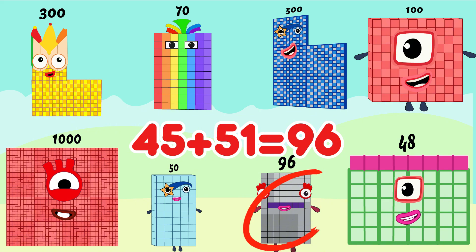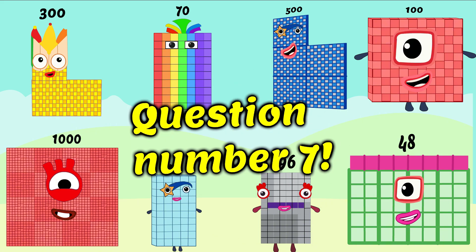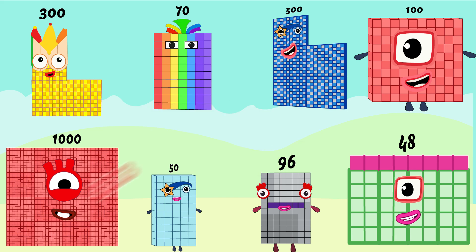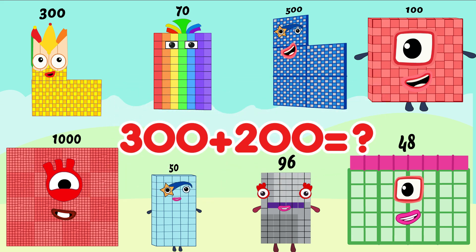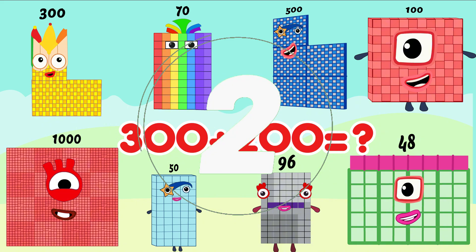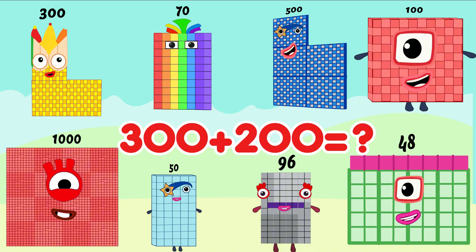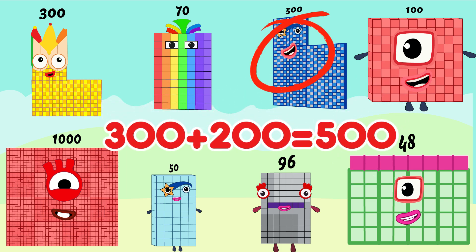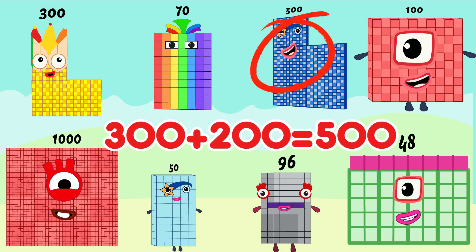Question number 7. 300 plus 200 is equal. Is correct answer. 300 plus 200 is equal 500.